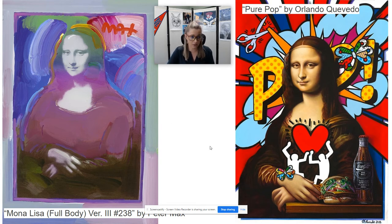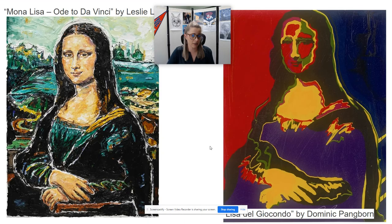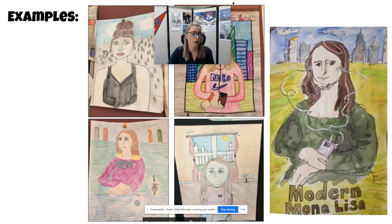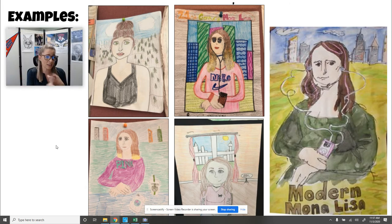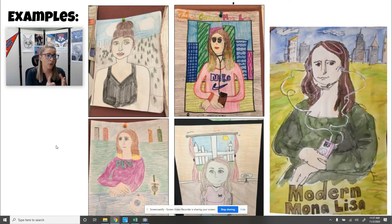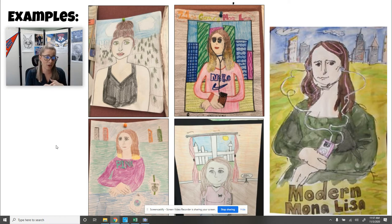You're going to be able to choose what you want to use to make your artwork. You can use watercolor painting, any tempera paint you might have at home, or even colored pencils, crayons, or markers. What I'm asking is for a full page demonstrating your modern Mona Lisa.